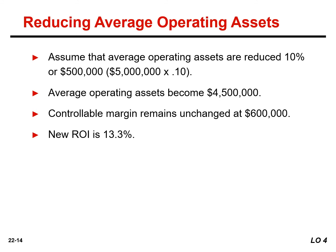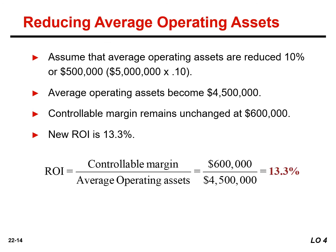In this last scenario, assume that average operating assets are reduced by 10%, or half a million, making average operating assets $4.5 million. Since controllable margin remains unchanged at $600,000, the new ROI is 13.3%. Reductions in operating assets may or may not be prudent. It is beneficial to eliminate overinvestment in inventories and to dispose of excessive plant assets. However, it is unwise to reduce inventories below expected needs or to dispose of essential plant assets.